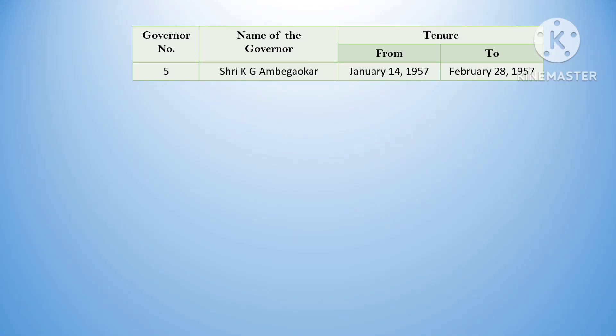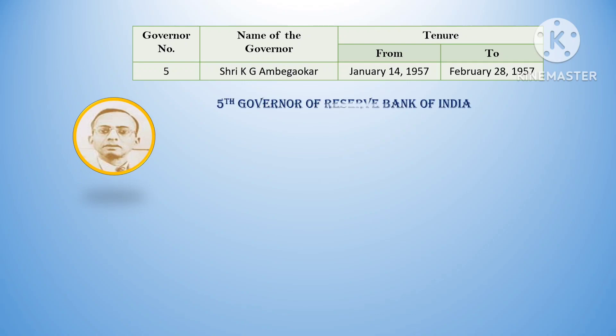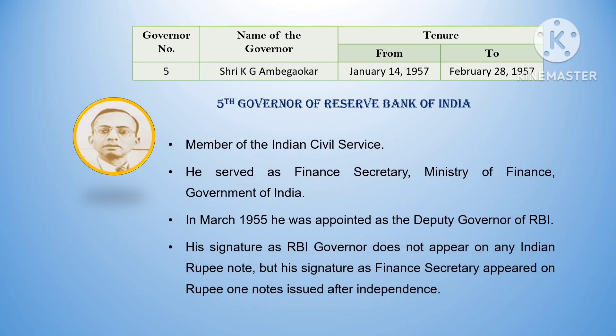The fifth governor was K.G. Ambegaupar. His tenure was from January 14, 1957 to February 28, 1957. He was a member of the Indian Civil Service and served as Finance Secretary, Ministry of Finance. In March 1955, he was appointed as Deputy Governor of RBI. His signature as RBI governor does not appear on any Indian note as his tenure was only about 42 days, until the next governor took his place.